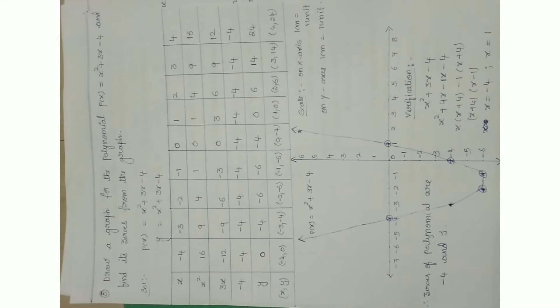Coming to chapter three: draw the graph of the polynomial p(x) = x² + 3x − 4 and find its zeros from the graph. Everything is done clearly. Do it in this manner so that you will get 8 out of 8 marks.